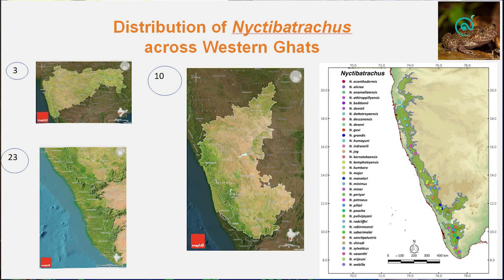Using DNA barcoding, we found that there are 37 species as of now distributed across the Western Ghats. Interestingly, in Karnataka we find 10 Nyctibatrachus, in Kerala there are 23, and in Maharashtra there are 3. The Western Ghats portion in Karnataka is much larger than Kerala, but why do we only find 10 species here, while Kerala, which is comparatively smaller, has 23? One reason is that more research has been done in Kerala. Many cryptic species remain undiscovered in Karnataka — I feel people have still not looked into these species and there are many more species than just 10.